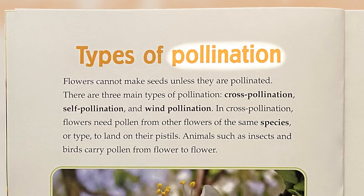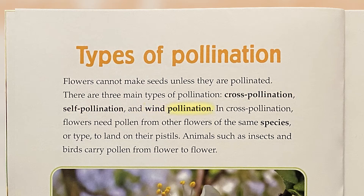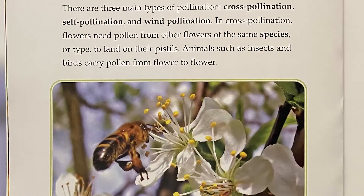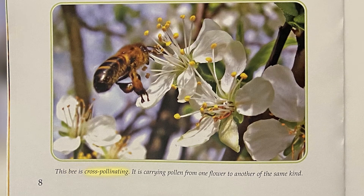Types of pollination: Flowers cannot make seeds unless they are pollinated. There are three main types of pollination: cross-pollination, self-pollination, and wind-pollination. In cross-pollination, flowers need pollen from other flowers of the same species or type to land on their pistils. Animals such as insects and birds carry pollen from flower to flower. This bee is cross-pollinating — it is carrying pollen from one flower to another of the same kind.